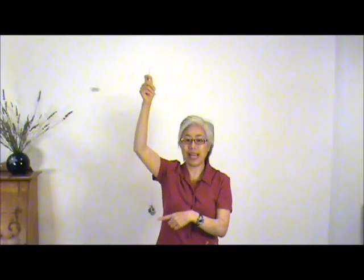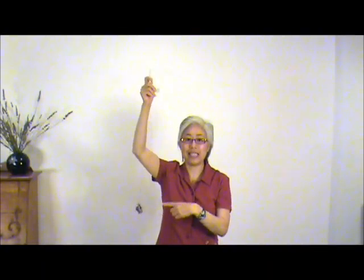And if I whirl this thing around, the rubber stopper goes around. And this weight hanging here provides the tension in the string. And the tension in the string pulls towards the center. That provides the centripetal force for the rubber stopper to do circular motion.